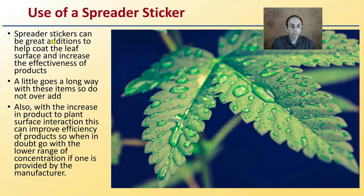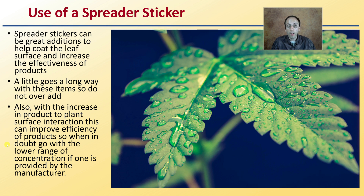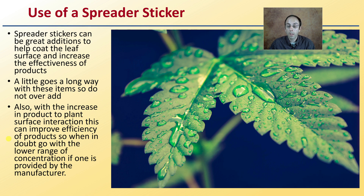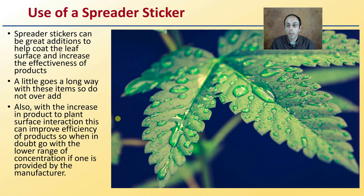Are you using a spreader sticker in your applications? Spreader stickers are great additions to help coat the leaf surface and increase the effectiveness of products. However, a little goes a long way — do not over-add them. With the increase in product-to-plant surface interaction, this can improve efficiency, so when in doubt go with the lower range of concentrations if one is provided by the manufacturer. If a range is given and you're utilizing a spreader sticker, you can favor the lower end — using less product, less potential for contamination, but still achieving the same effectiveness through better coverage. Without spreader sticker, water forms distinct droplets; with it, it forms a sheet over the entire leaf surface, improving interaction.